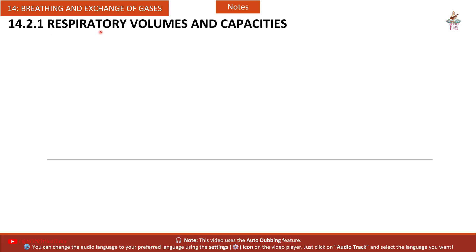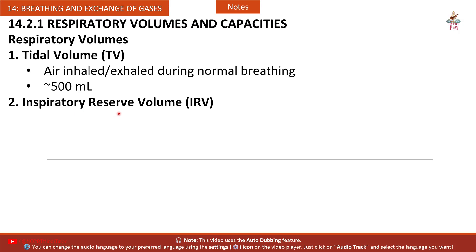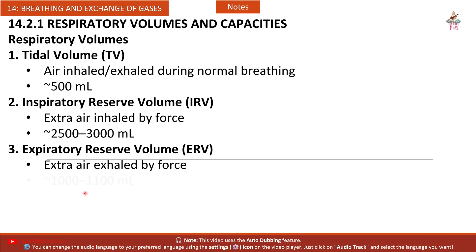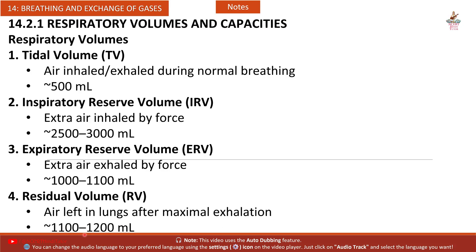Section 14.2.1 — Respiratory Volumes. First, Tidal Volume (TV): air inhaled or exhaled during normal breathing — approximately 500 ml. Second, Inspiratory Reserve Volume (IRV): extra air inhaled by force — approximately 2500 to 3000 ml. Third, Expiratory Reserve Volume (ERV): extra air exhaled by force — approximately 1000 to 1100 ml. Fourth, Residual Volume (RV): air left in lungs after maximal exhalation — approximately 1100 to 1200 ml.